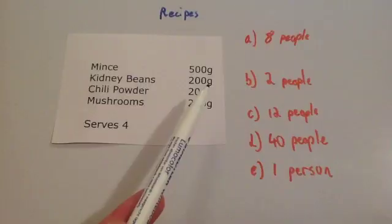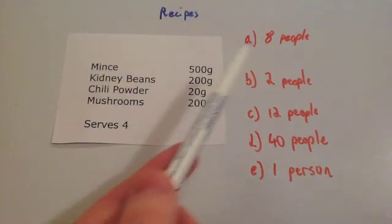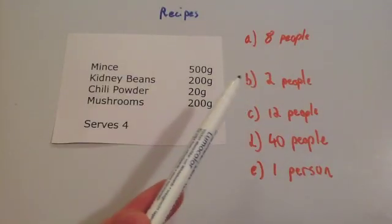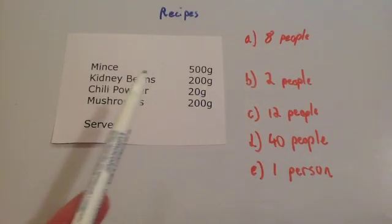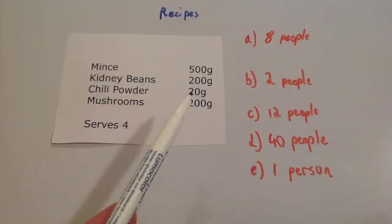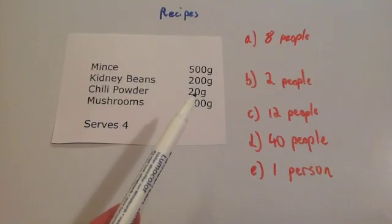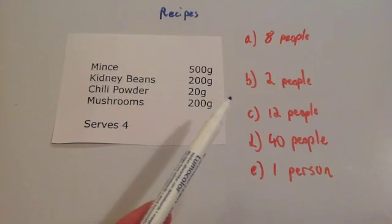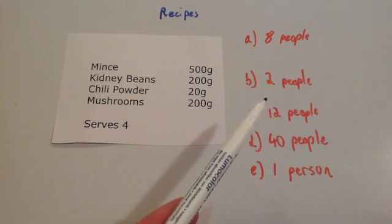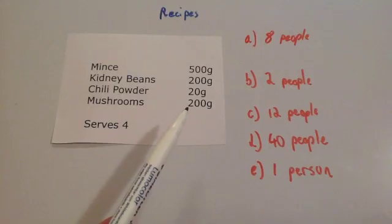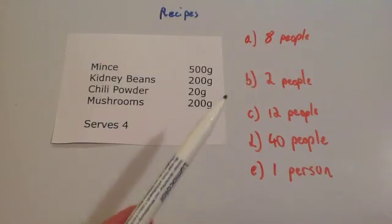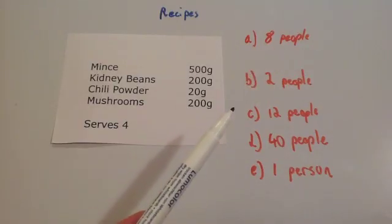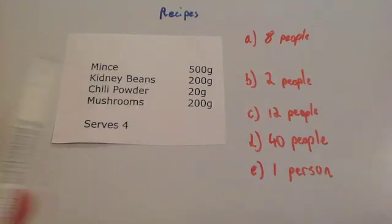Instead of 200 grams of kidney beans for eight people, it would be double, so it would be 400 grams of kidney beans. Instead of 20 grams of chili powder, it would be 40 grams of chili powder. Instead of 400 grams of mushrooms, it would be double, so it's going to be 400 grams of mushrooms and so on.